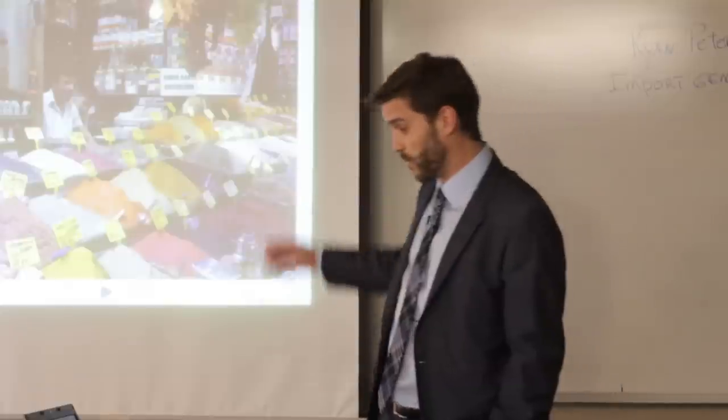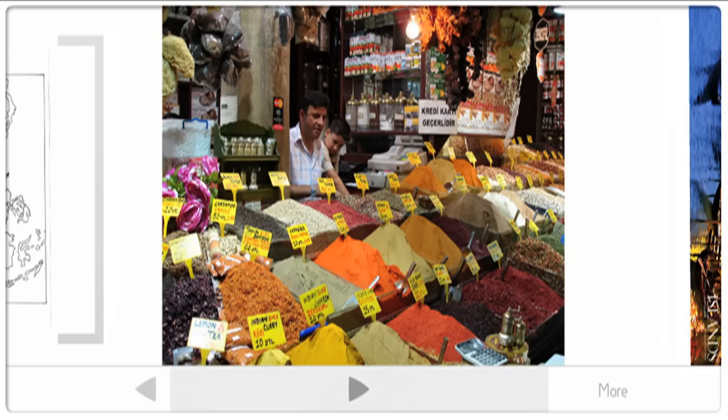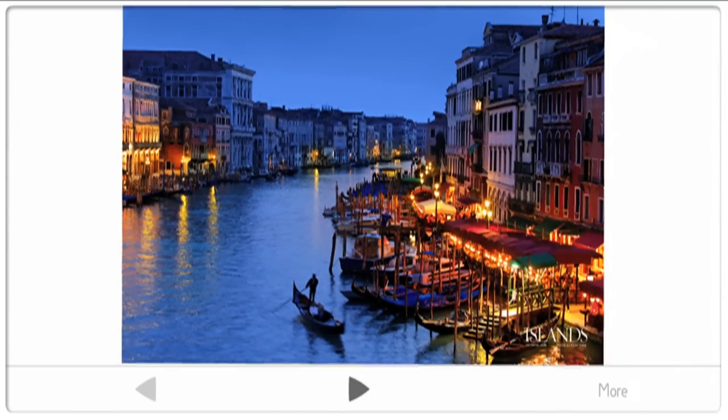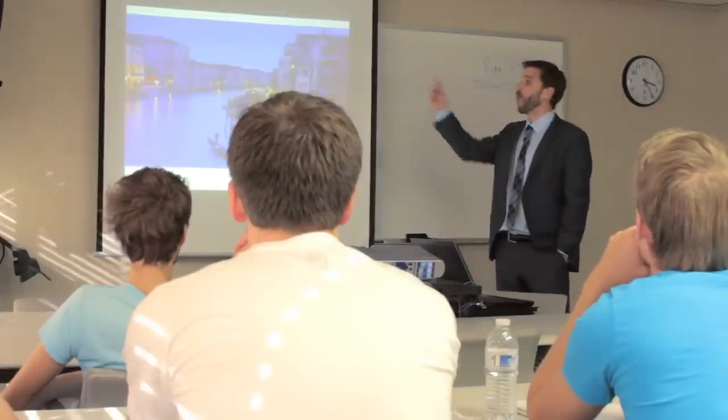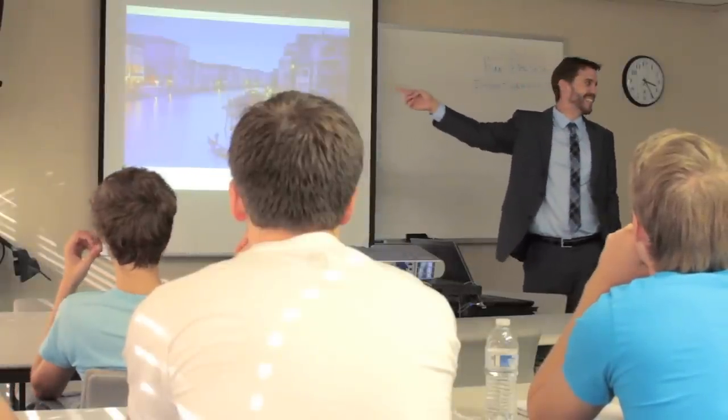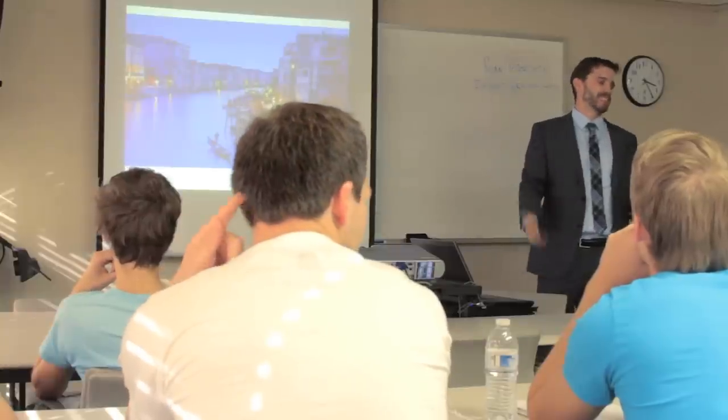This is just a picture of a spice market so you get an idea. These are the types of products that were coming from those islands. Who got rich off of the spices in Europe? Venice. That's where all the money to build Venice. Venice was built on the spice trade.